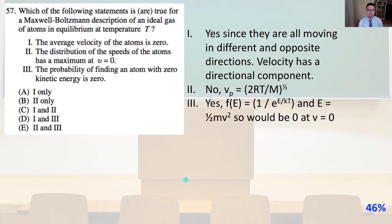v_p is going to equal the square root of 2RT over m. And remember, speed does not have a directional component, so it is not going to have a maximum of v equals zero. For number three, yes, f of v is going to equal 1 over e to the E divided by kT, and E equals one half mv squared, so it would be zero at v equals zero. And that leaves us with answer D.